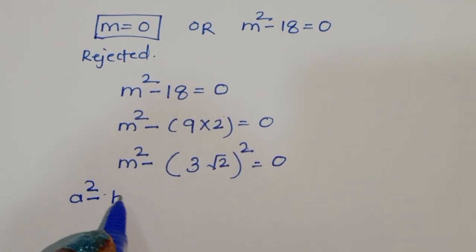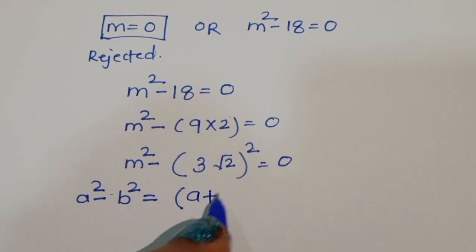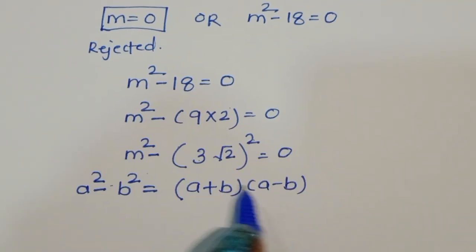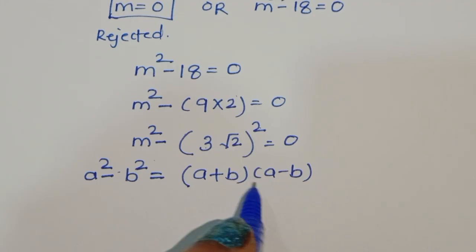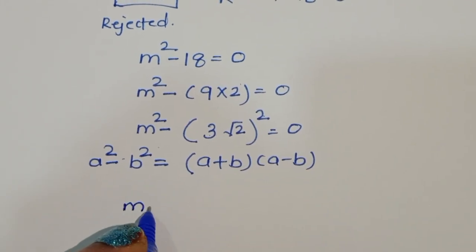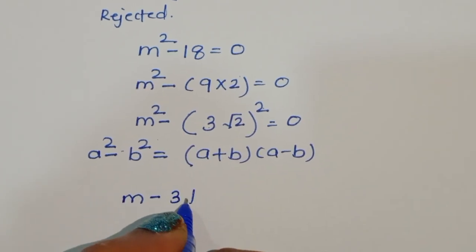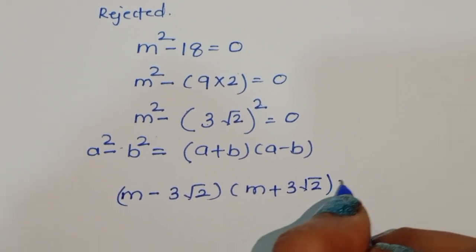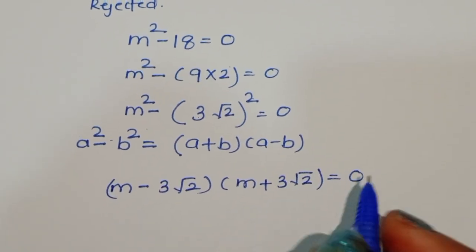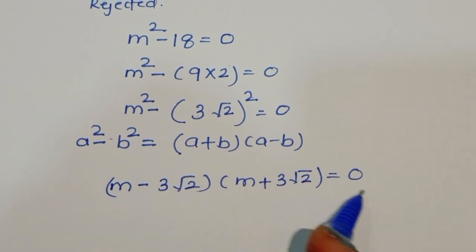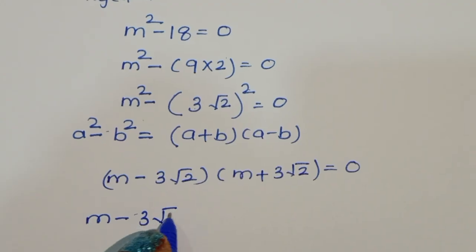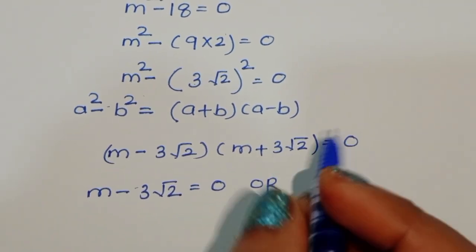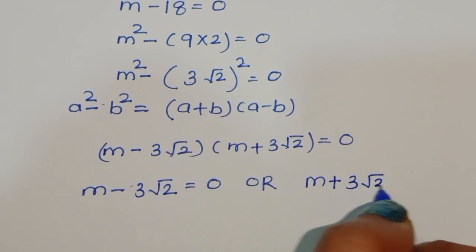Using the formula a squared minus b squared equals (a plus b)(a minus b), we substitute to get (m minus 3√2)(m plus 3√2) equals 0. This gives us two equations: m minus 3√2 equals 0, or m plus 3√2 equals 0.